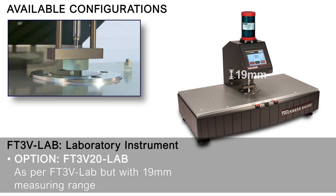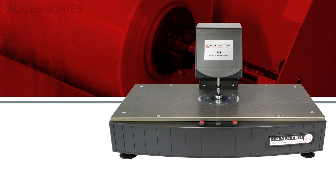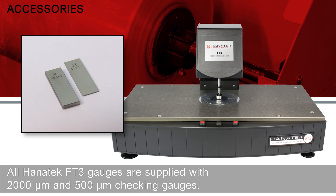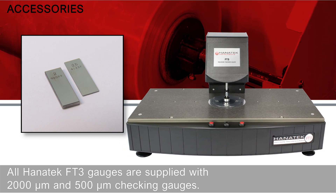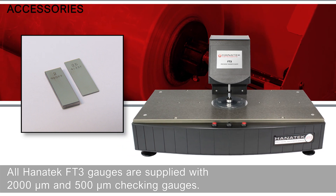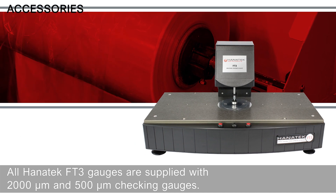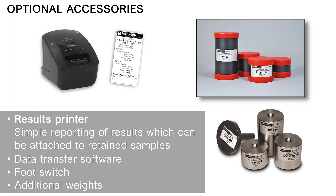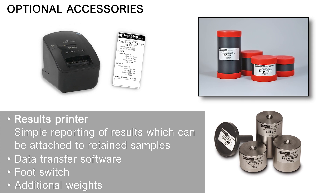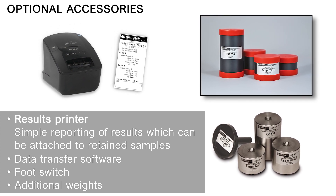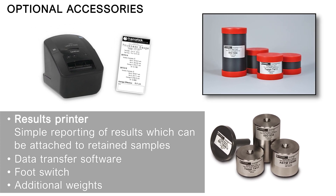Option FT3 V20 Lab: as per FT3V Lab but with a 19mm measuring range. All Hanatec FT3 gauges are supplied with 2mm and 500 micron checking gauges. Optional accessories include a results printer for simple reporting of results which can be attached to retained samples, and data transfer software.